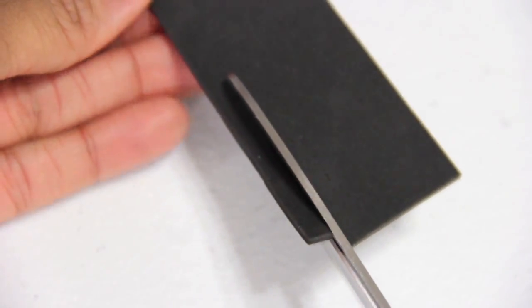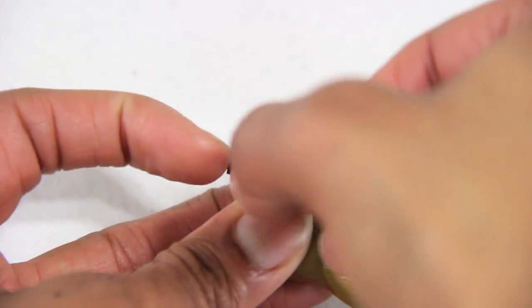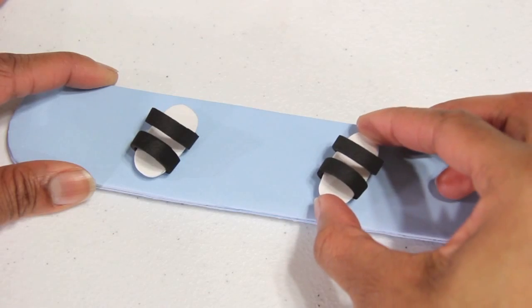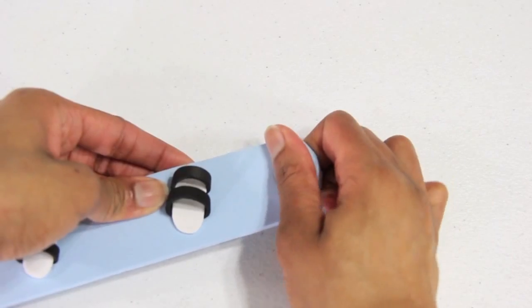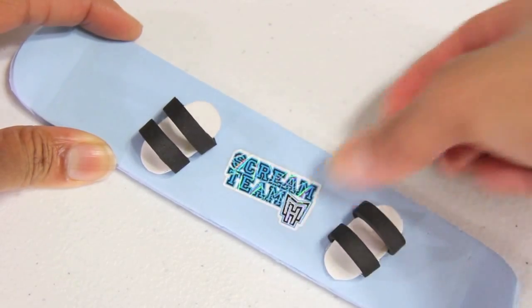I cut thin strips of craft foam, fit them to my doll's shoe, make two, and glue them to my board. I slightly bend the ends of my board up and decorate it with a few stickers.